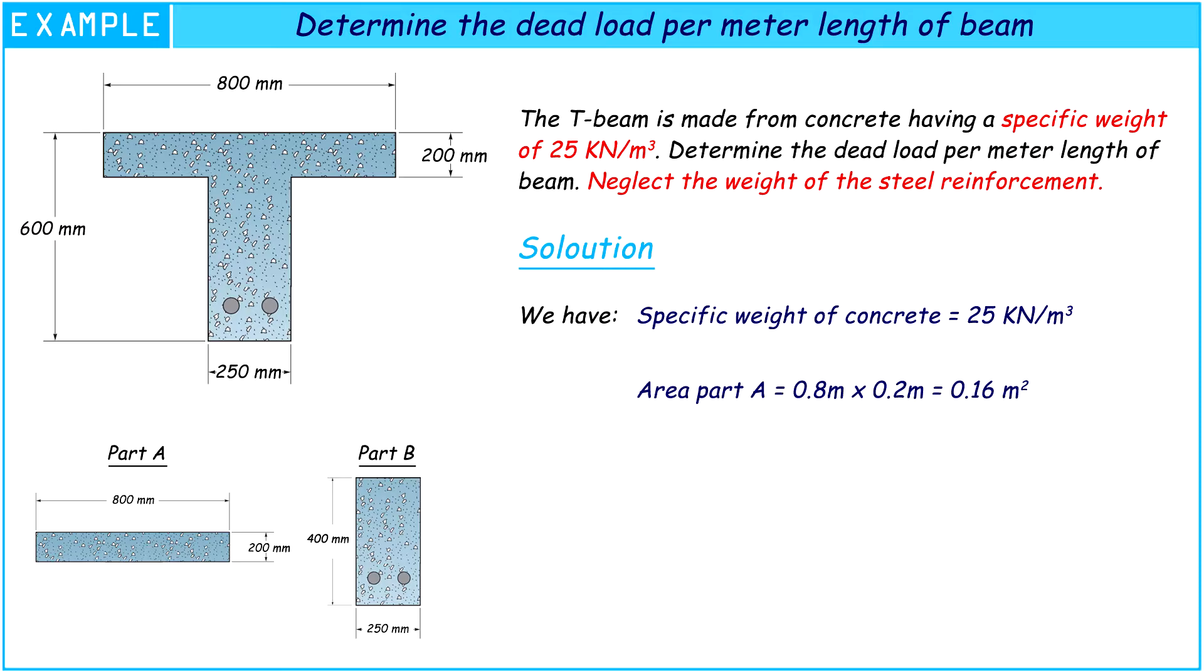The area of Part B, 250 mm width and 400 mm length, is 0.1 square meters.